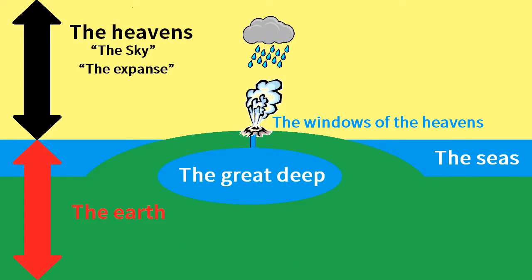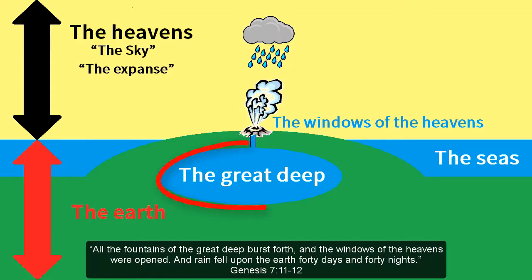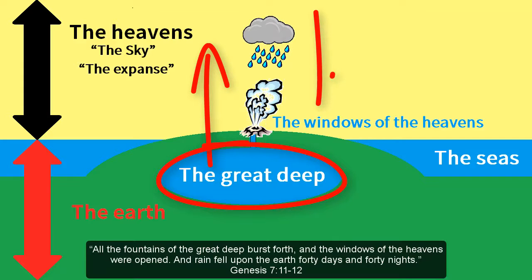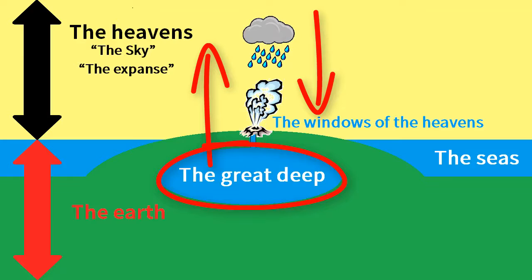Genesis chapter 1 sets the stage for the events of Genesis chapter 7, verse 11: 'All the fountains of the great deep burst forth, and the windows of the heavens were opened, and rain fell upon the earth forty days and forty nights.' The parallelism of fountains of the great deep bursting forth with windows of the heavens opened depicts not holes in a solid dome letting the rain fall downwards, but cracks in the earth letting water burst upwards before falling back to earth.